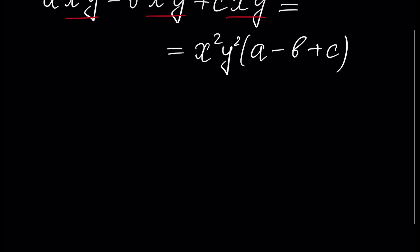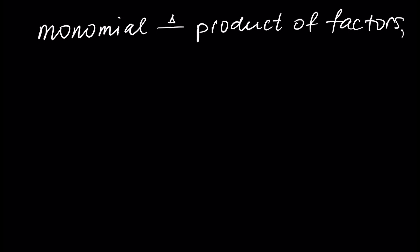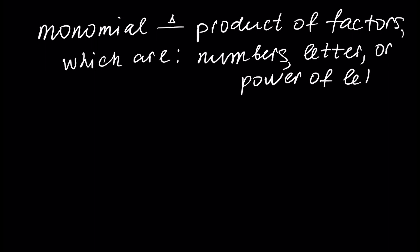First of all, we have to define a monomial. Monomial is, by definition, a product of factors. Factors which are numbers, a letter, or a power of a letter. So, a monomial is a product of factors where each factor is a number, a letter, or a power of a letter.